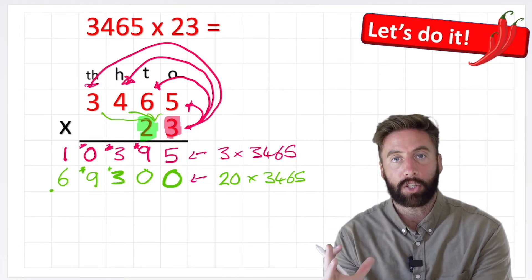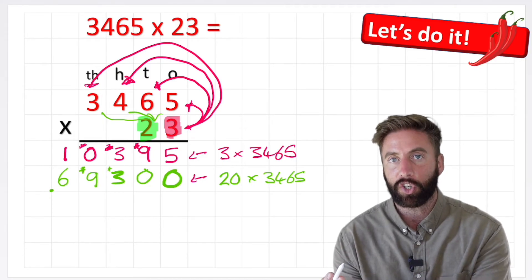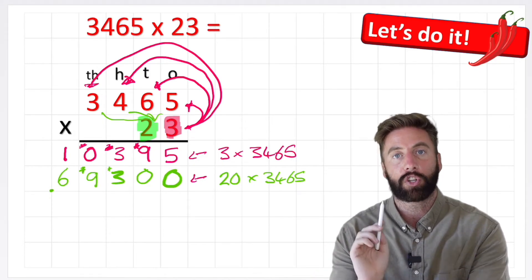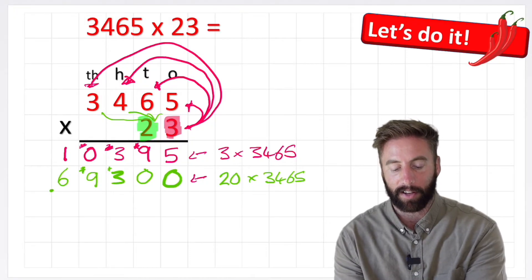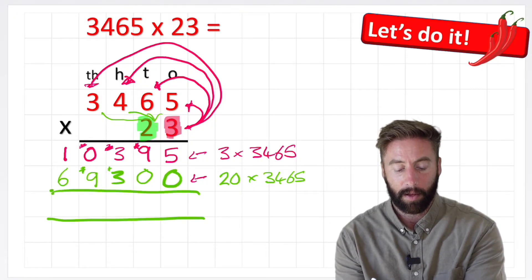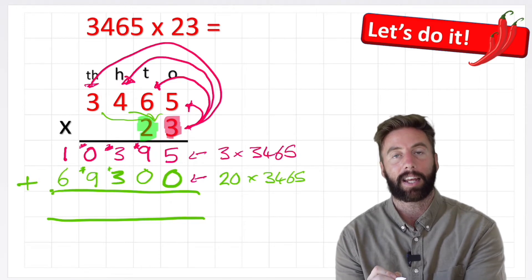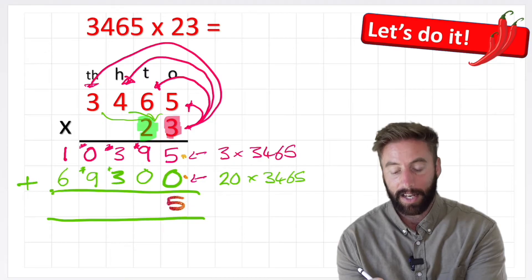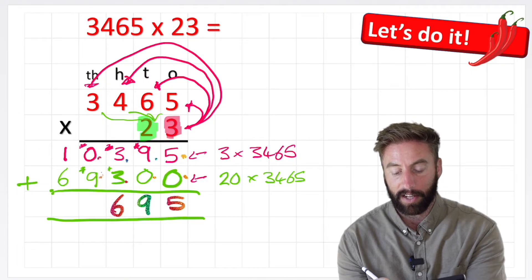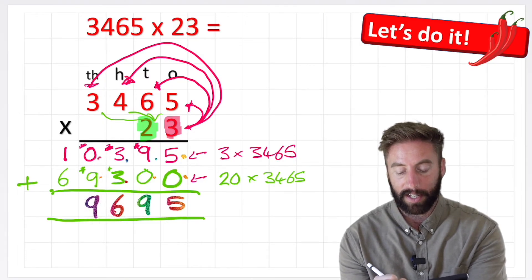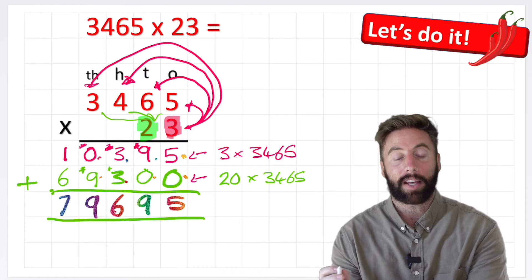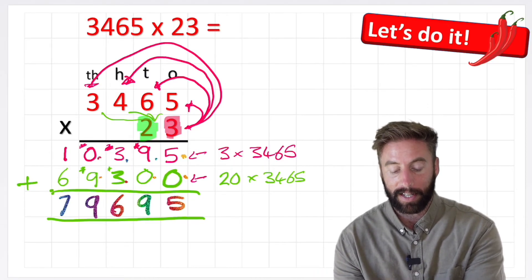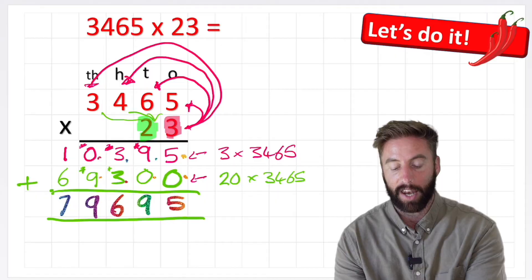Now I've answered my two individual lines, I've answered all my partition sections. Now I need to smash it back together to get my final answer. So I can put my equals line, put an add sign, and here I go. 5 plus 0 is 5, 9 plus 0 is 9, 3 plus 3 is 6, 0 plus 9 is 9, 1 and 6 is 7. So there we have it, 3465 times 23 is 79,695.